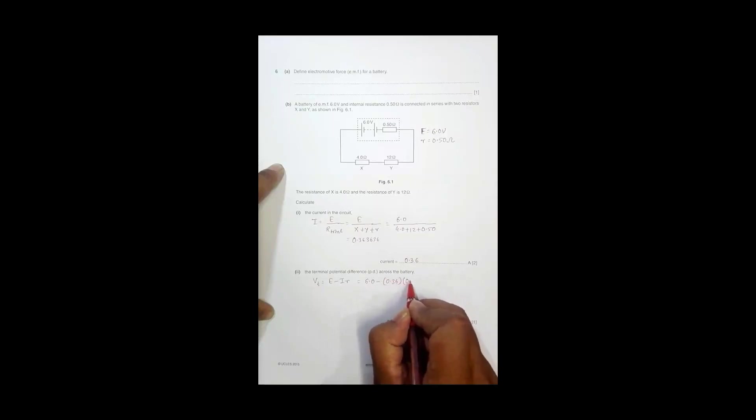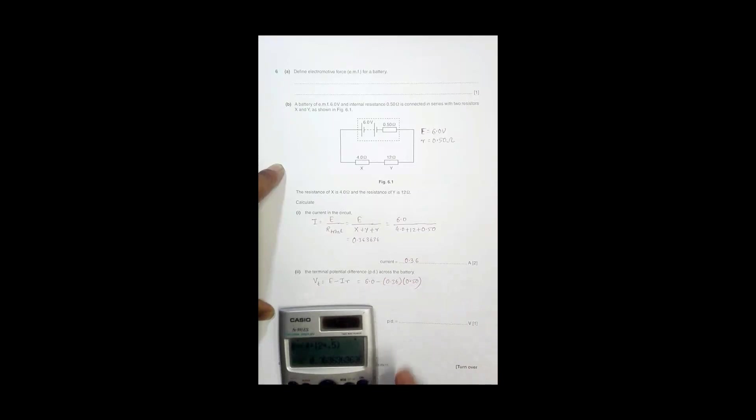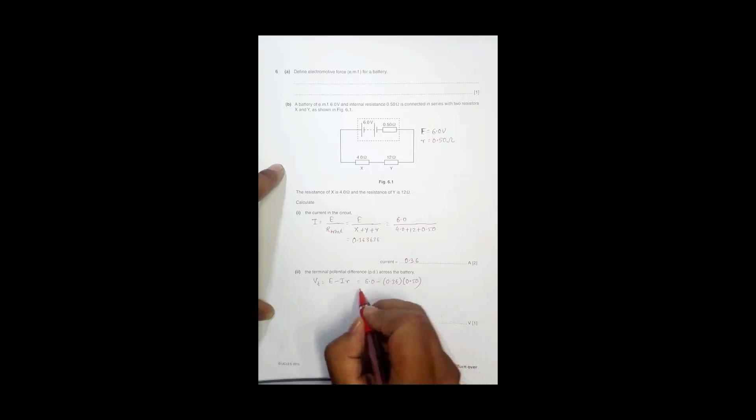So the value here is 5.82 equal to, let me choose the significant figures, minus 6 equal to, so it is 5.8, 5.8181818 volt. So I just write here 5.8 volt.